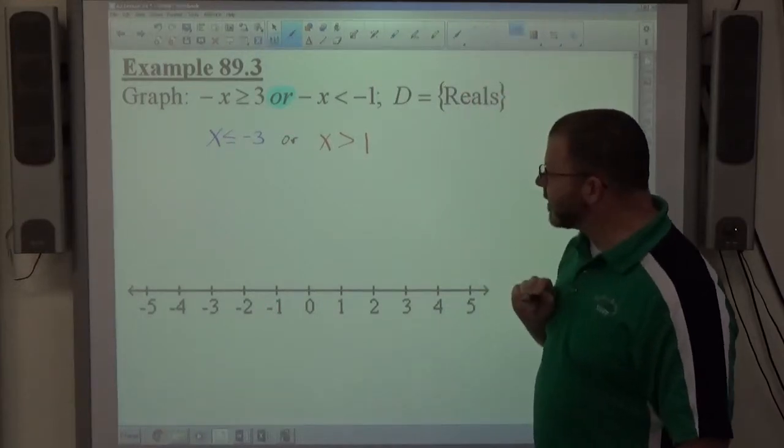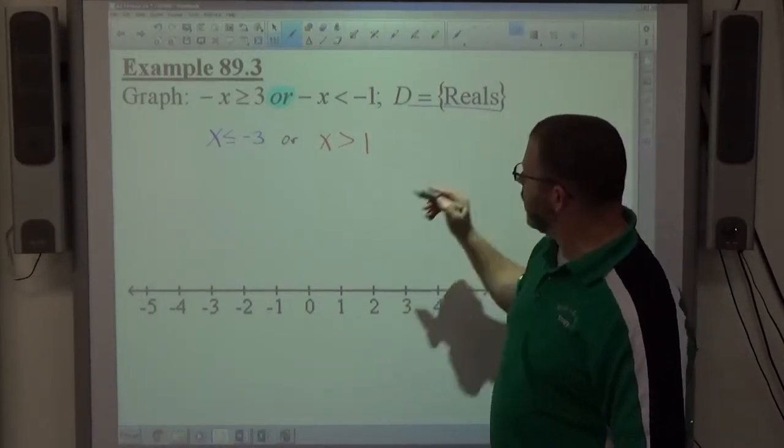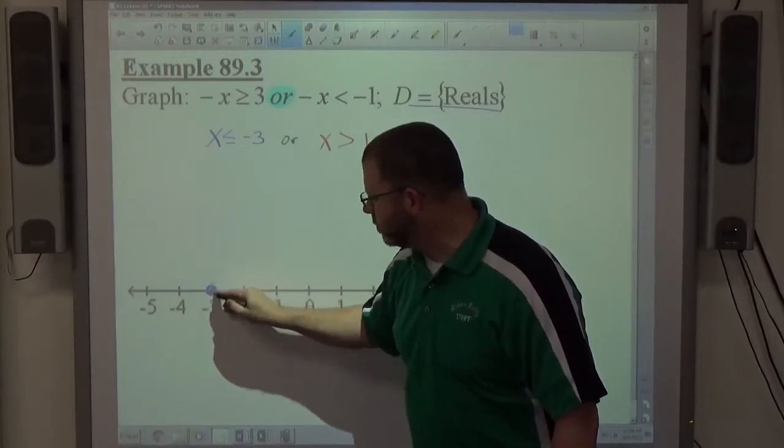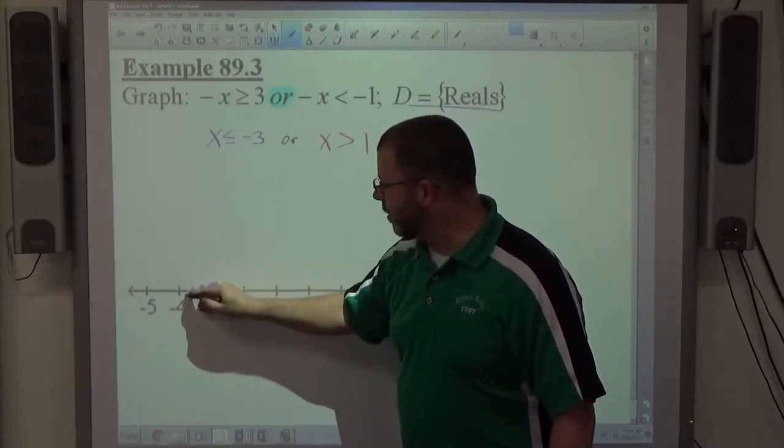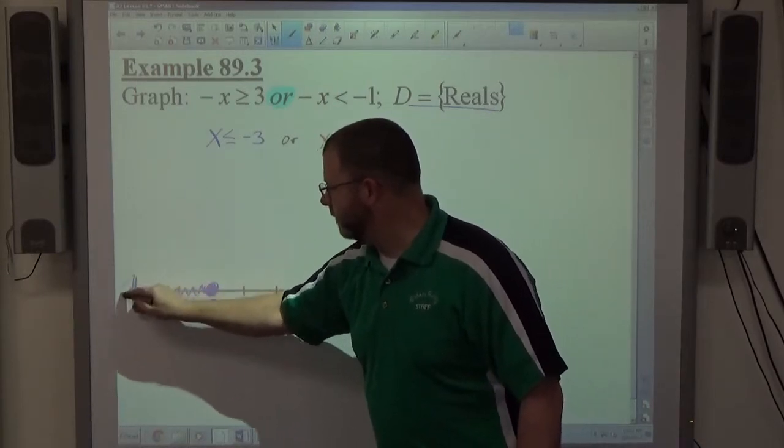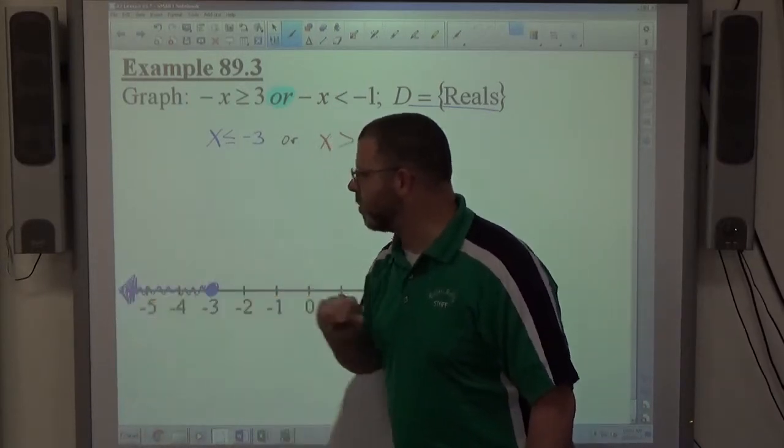So x is less than or equal to negative 3, domain set of real numbers: is it open or closed circle? It's closed because it equals to. Less than or equal to goes to the left. So I graphed that inequality on the number line.